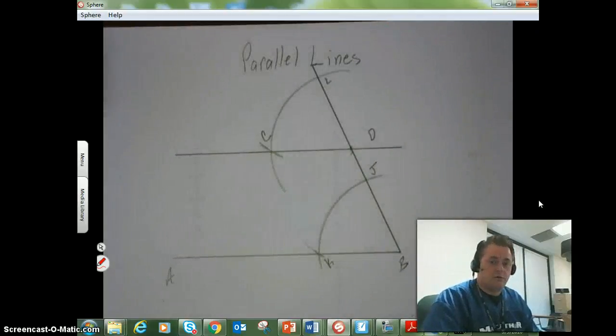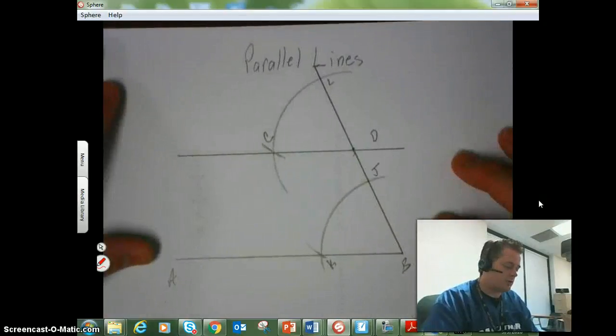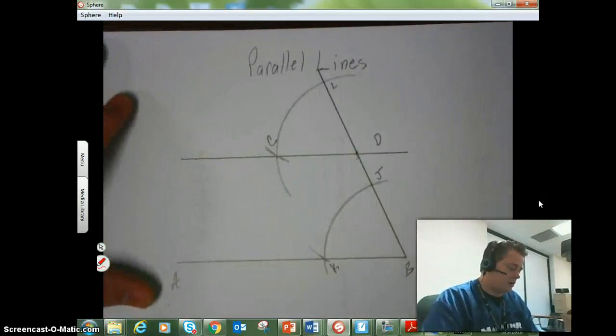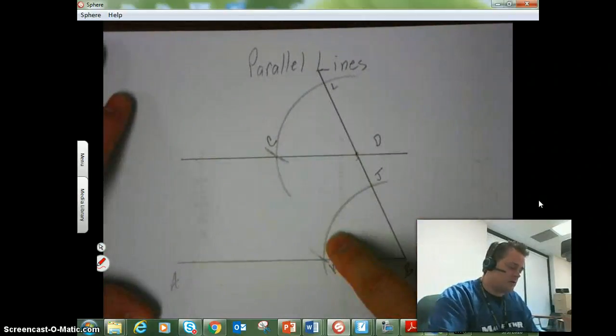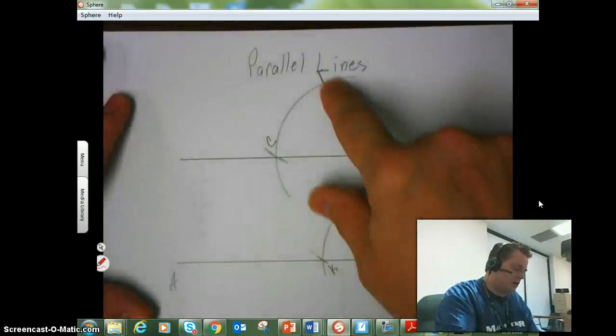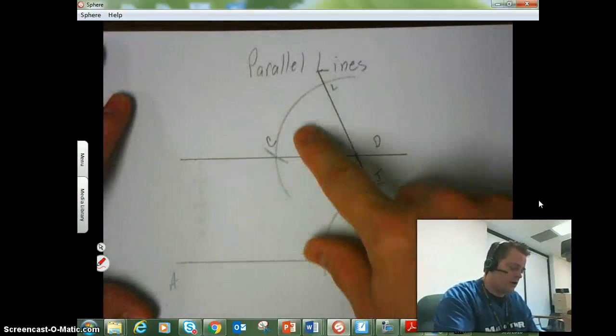Now if we needed to clean this up a little bit to continue working on building a bigger shape with our compass and straight edge, then we could obviously erase some of the extra line here, here, or however we needed to do it.